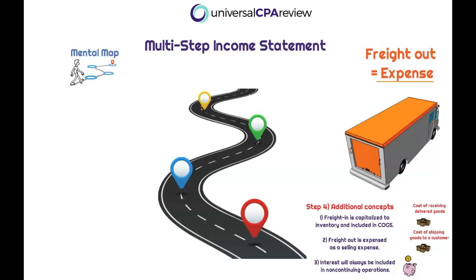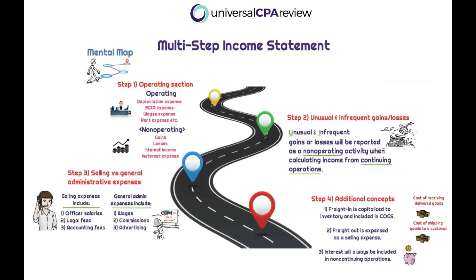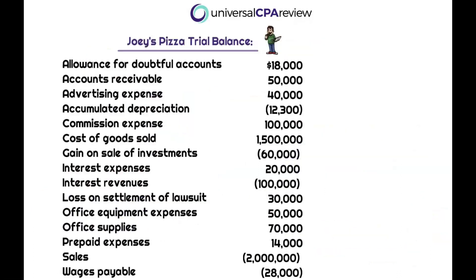Something else sneaky to note: interest will always be included in the non-operating section. So again, this is our multi-step income statement mental map — we've got to know it. Now we're going to put together a multi-step income statement straight from a trial balance. Very frequently you'll get these types of questions in a task-based simulation format, so we've got to be ready for anything the AICPA throws our way.